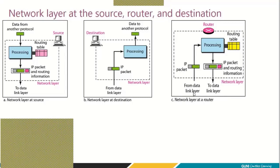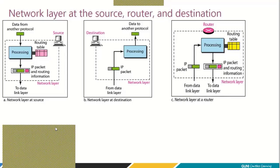At the router, the network layer receives data from the data link layer, examines the header, looks at the destination IP address, and consults the routing table. Since the router may be connected to multiple networks, it decides on which network to pass the data. This is the network layer at the router — it has a big role to play. If your objective is only data communication within a local area network, you do not require a network layer at all. But if you want to carry packets across networks, you need a network layer.